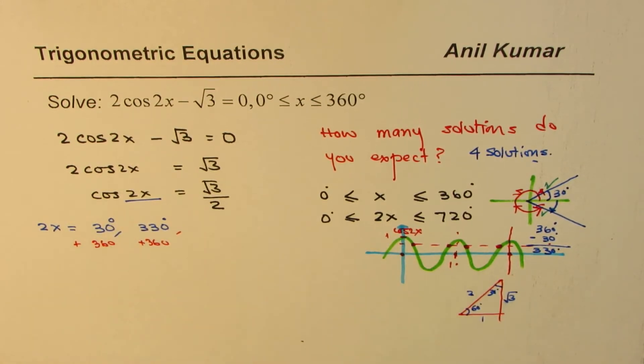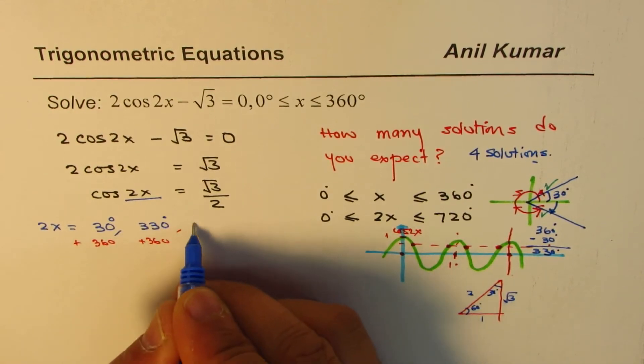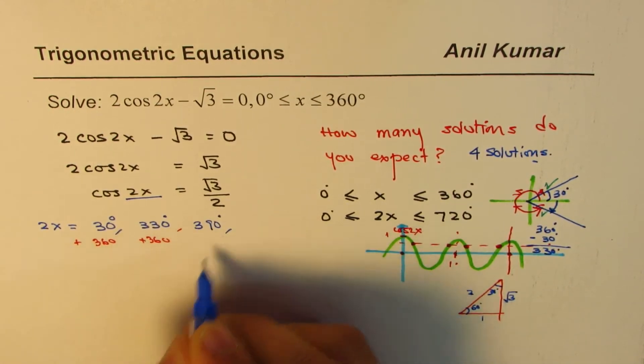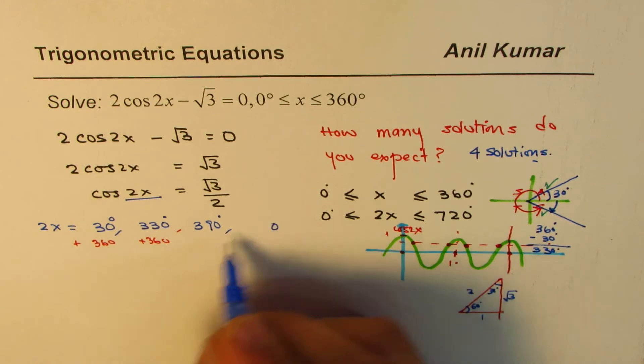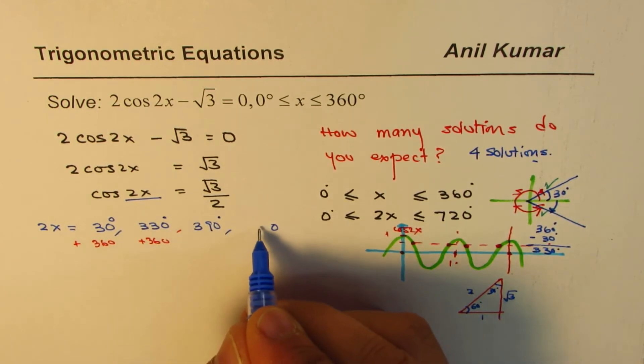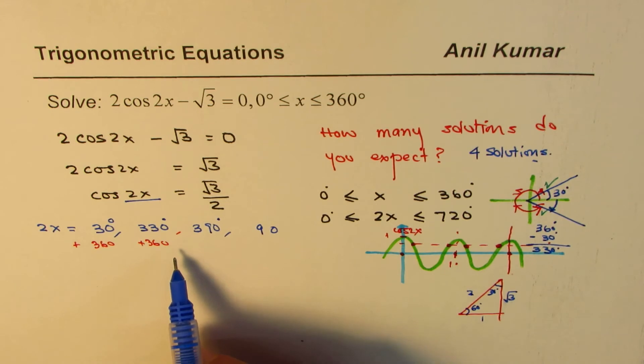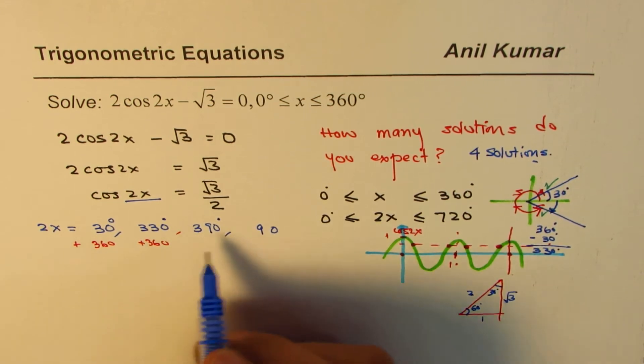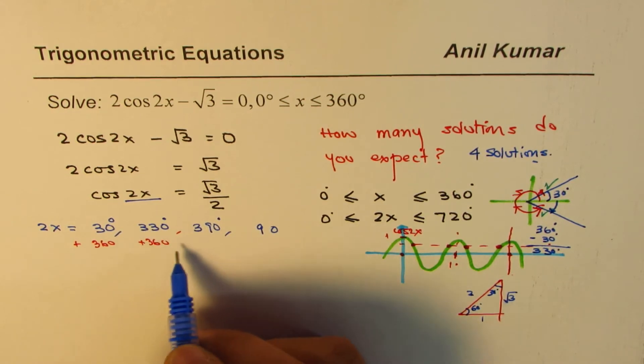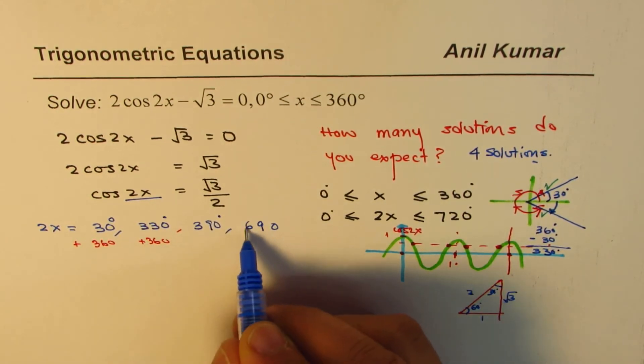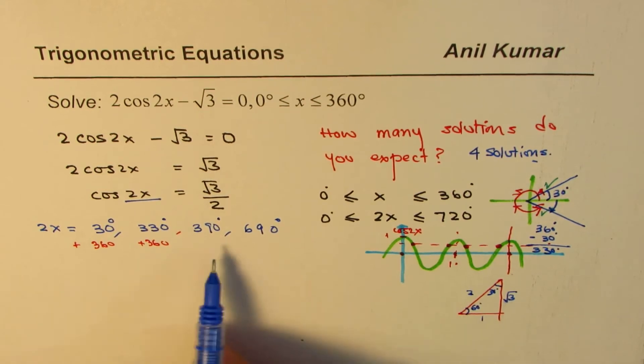360 plus 30 is 390 degrees. And when you add these two, you get 690 degrees. So what you get here is add these two to get the other two. So what we did here was, we added this to the first value to get the other one, and then we added this to it. So these are the four solutions.